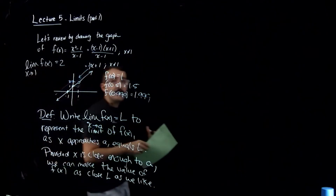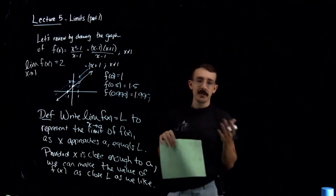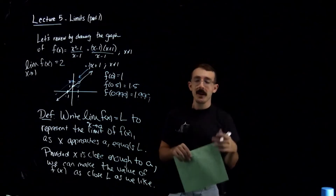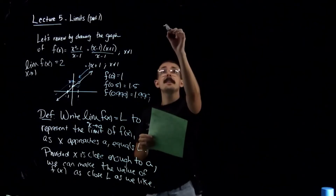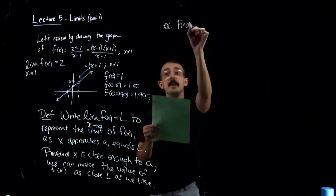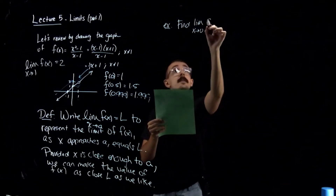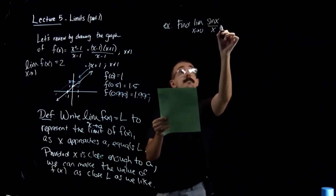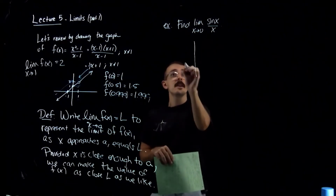For limits, it's very helpful to draw the graph of the function so you can see what's going on. It's not always possible because some graphs are very complicated. Let's look at another example: we're going to find the limit as x goes to 0 of sin(x)/x.